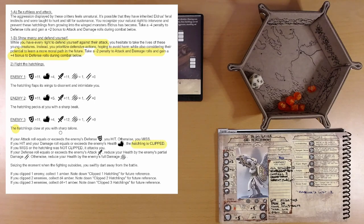We're clipping its wings, I guess. If you miss or the hatchling was not clipped, it attacks you. Fair enough. So we're not killing them. We're clipping them. And we're noting how many hatchlings we clip.